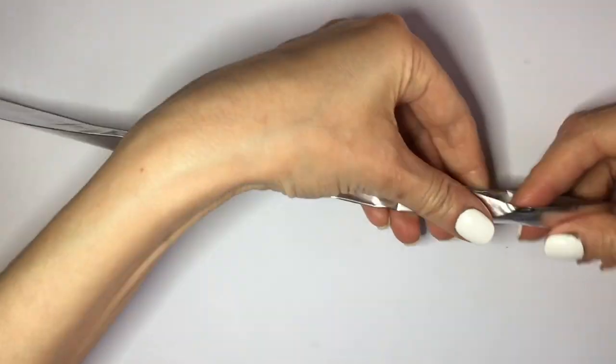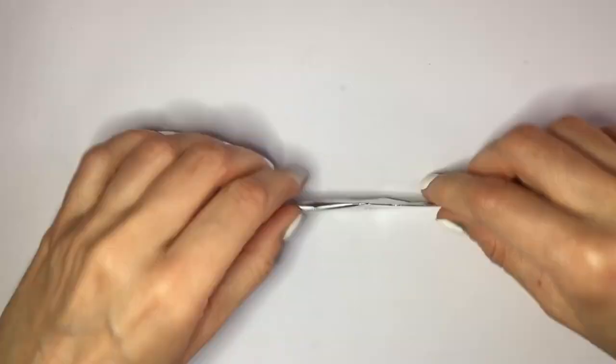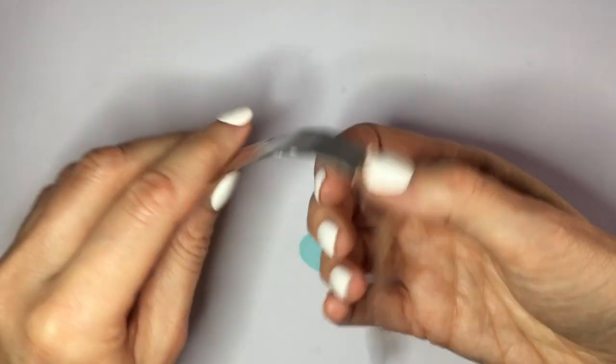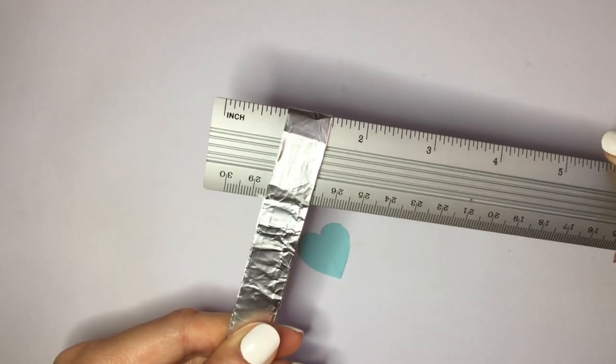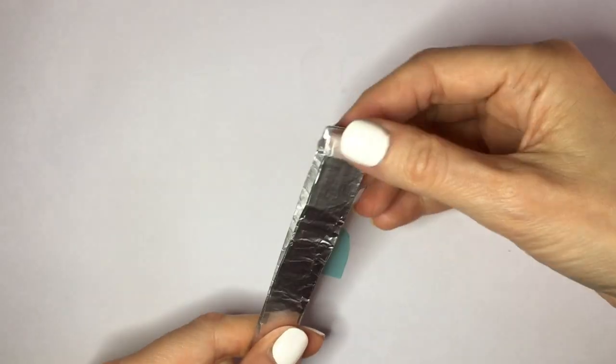So you basically want the same thickness of regular cookie cutters. I'm going to be folding that and then taking a ruler and just making that pointy, the top part of the heart like this.